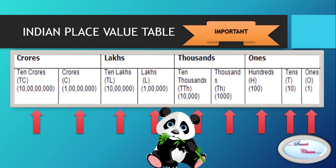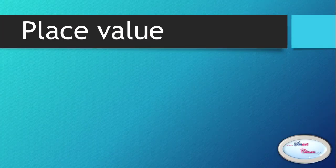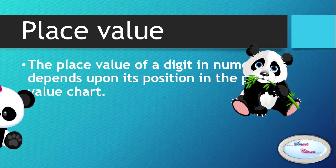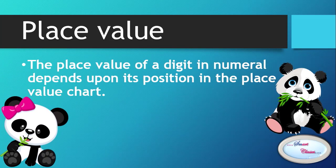Now the question arises: what is place value and how do we find it? The place value of a digit in a numeral depends upon its position in the place value chart. We can understand this using some examples.